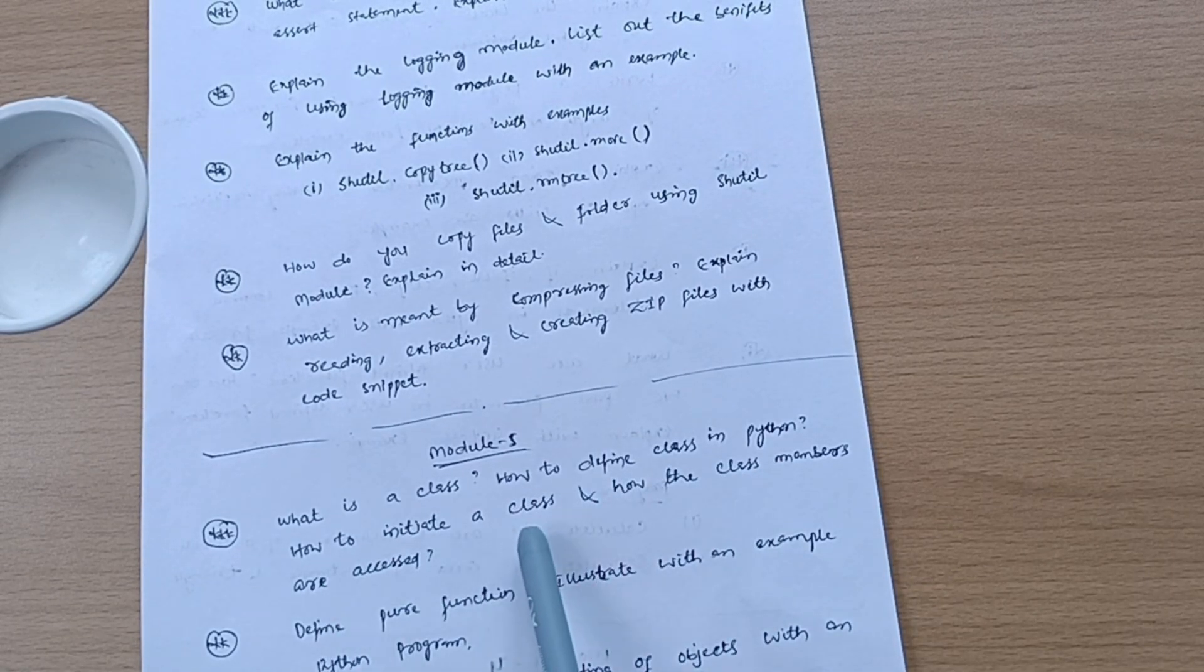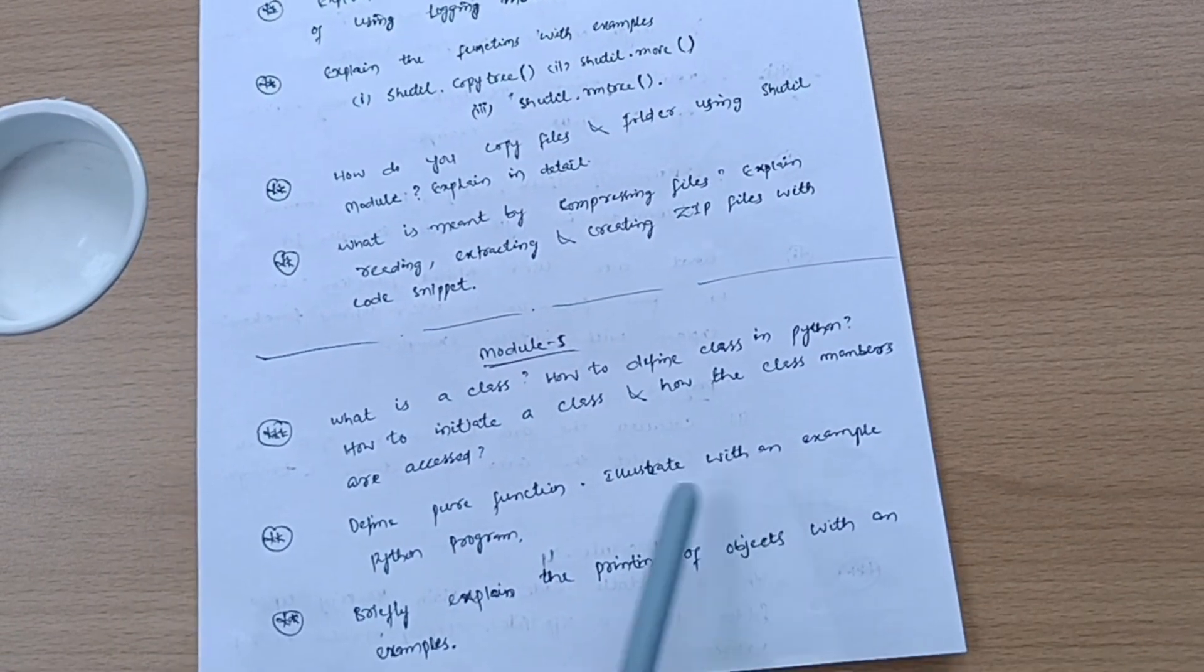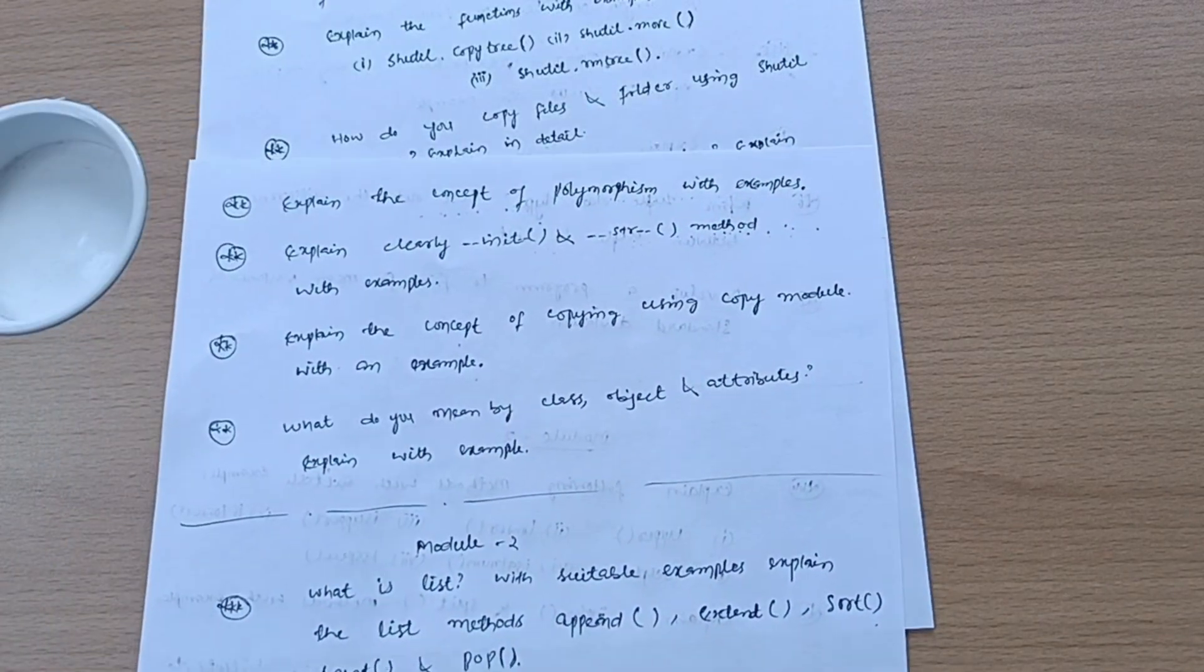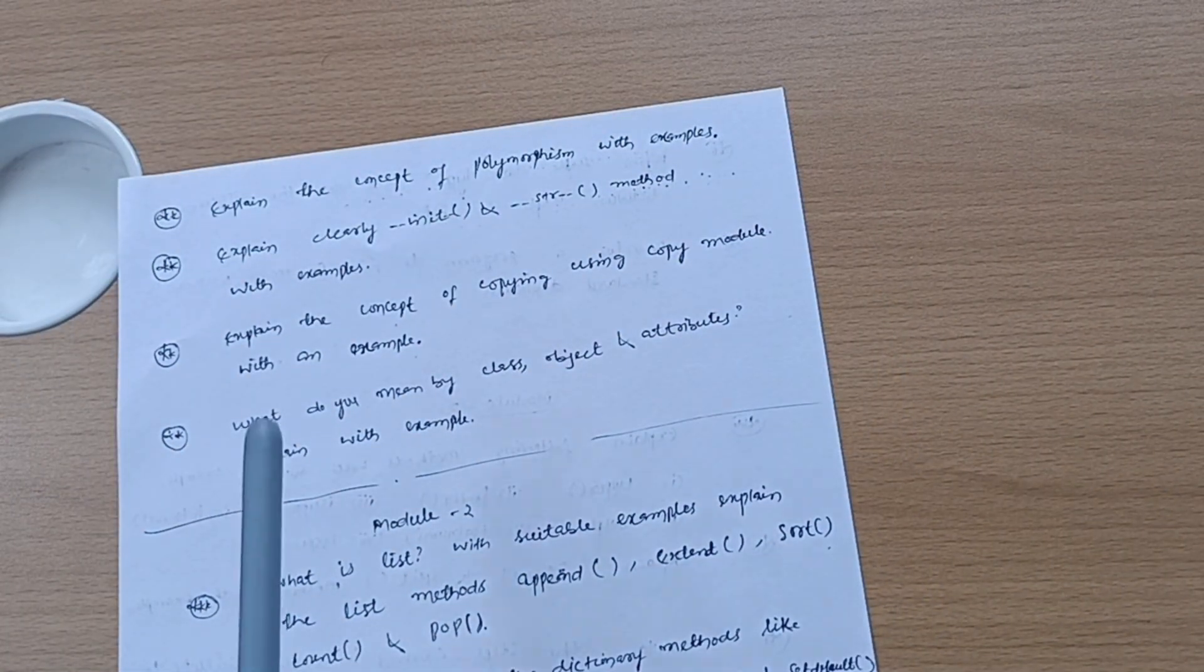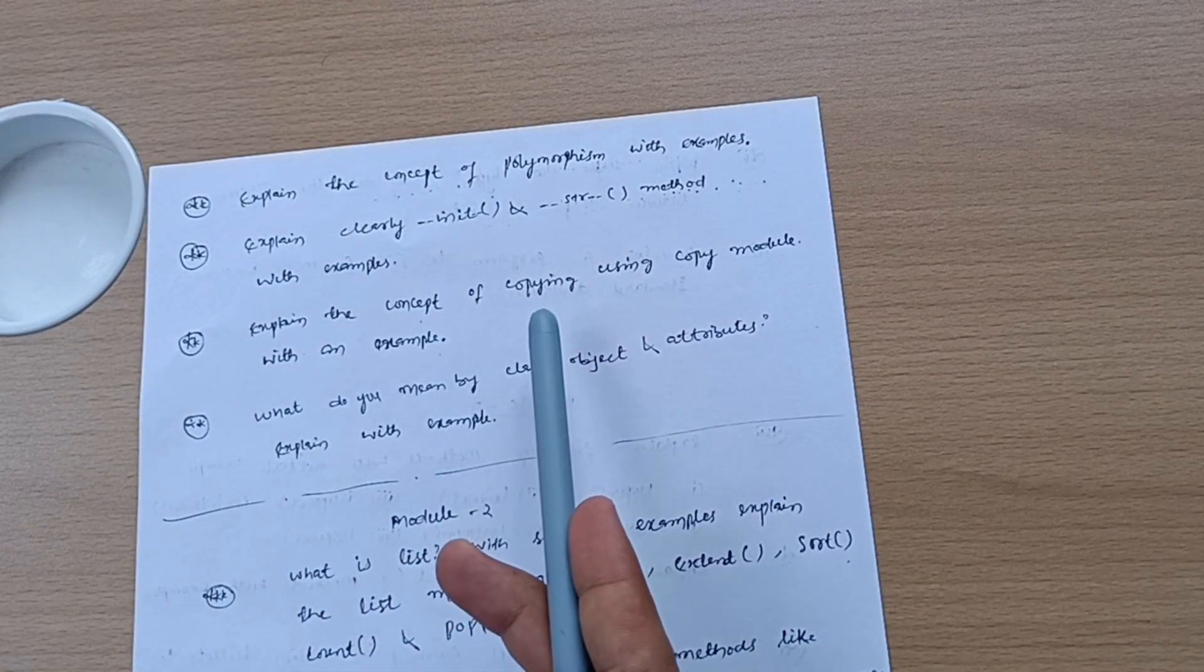In Module 5, cover: What is a class? How to define class in Python? How to initiate a class and how are class members accessed? Define pure function, illustrate with an example by Python program. Briefly explain the printing of objects with an example. Explain the concept of polymorphism with examples.